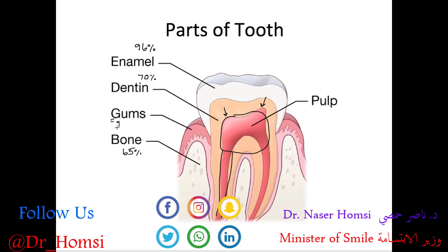The gums are sometimes also referred to as the gingiva — those terms are synonymous. Not shown in the diagram is a thin layer just below the enamel on the outside of the tooth called the cementum.